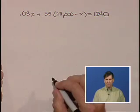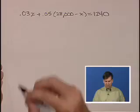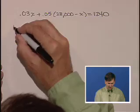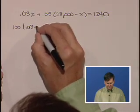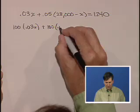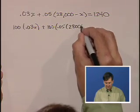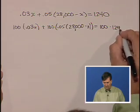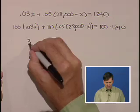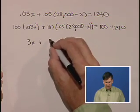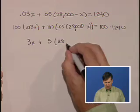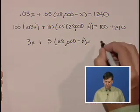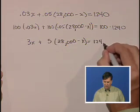To solve this equation for X, first we're going to multiply by 100 so that we get rid of the decimals. We have 100 times 0.03X plus 100 times 0.05 times 28,000 minus X equals 100 times 1,240. So 100 times 0.03X is 3X plus 100 times 0.05 is 5 times 28,000 minus X, and 100 times 1,240 is 124,000.